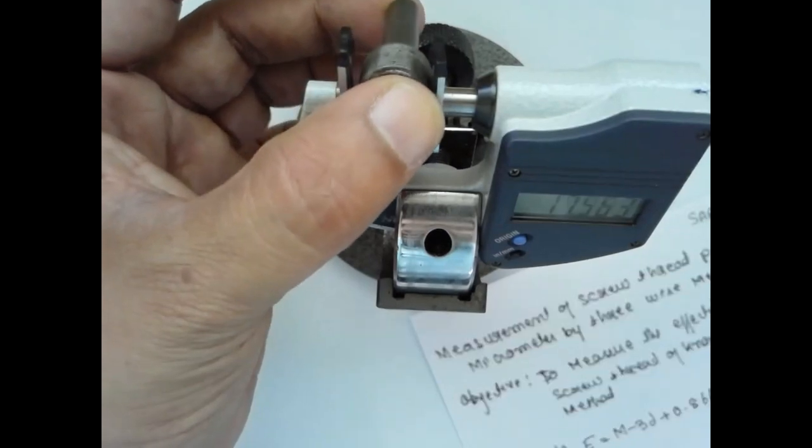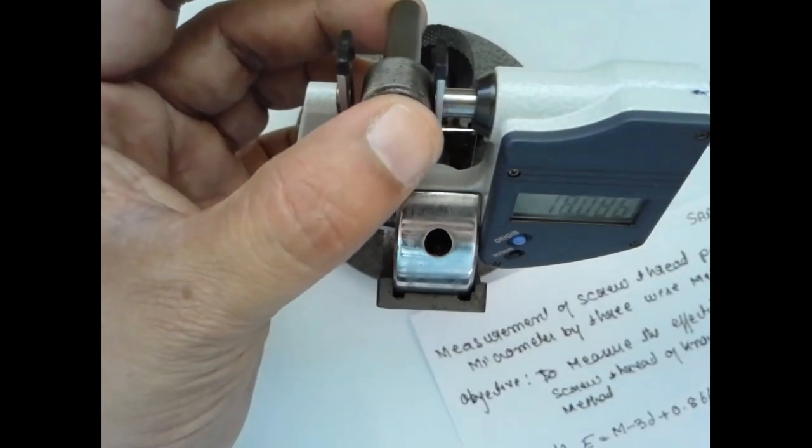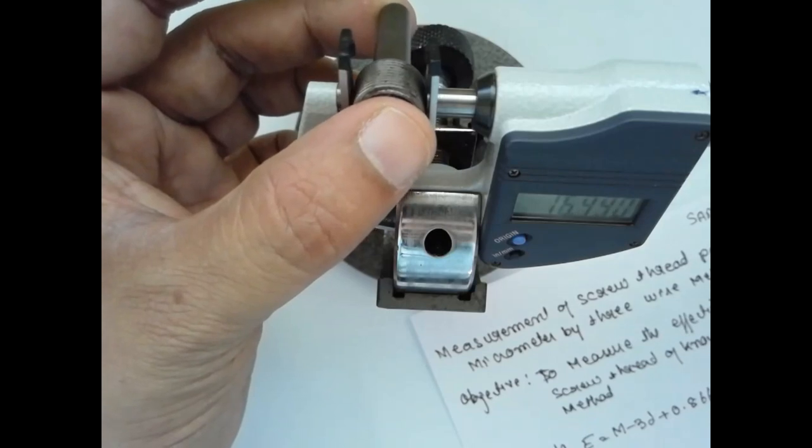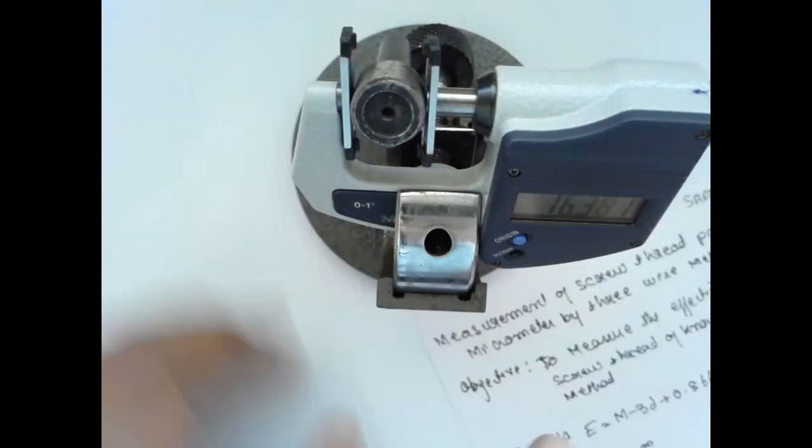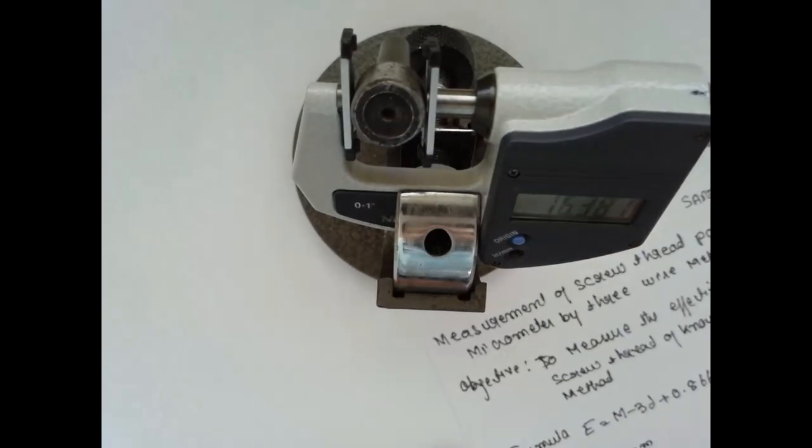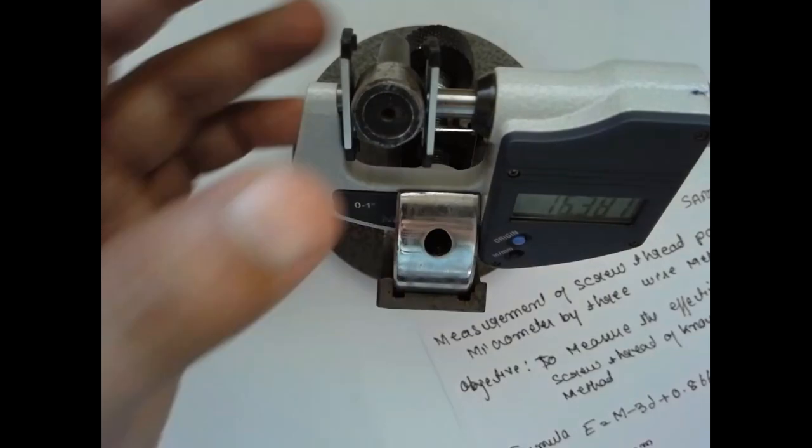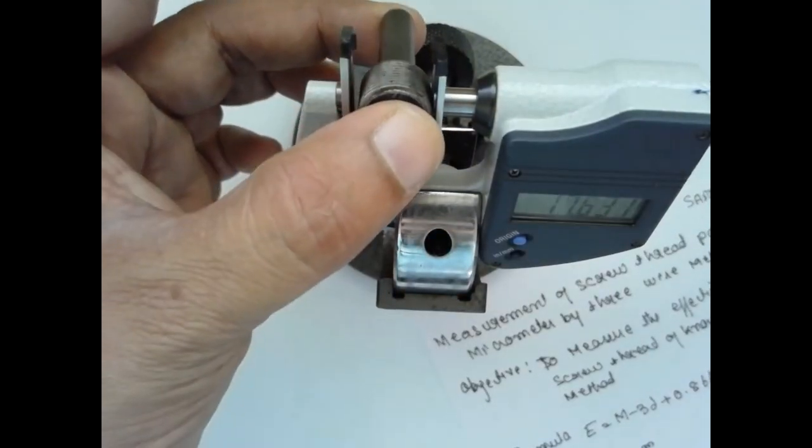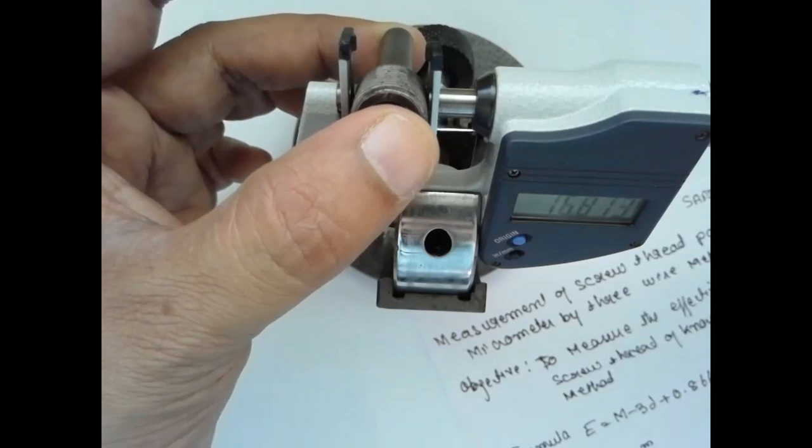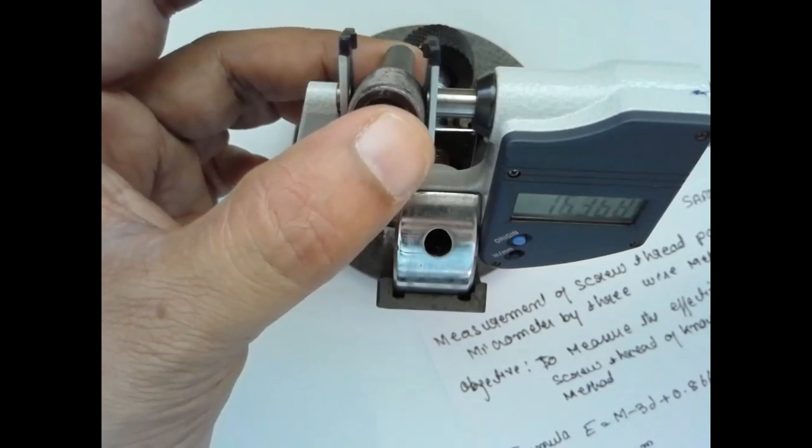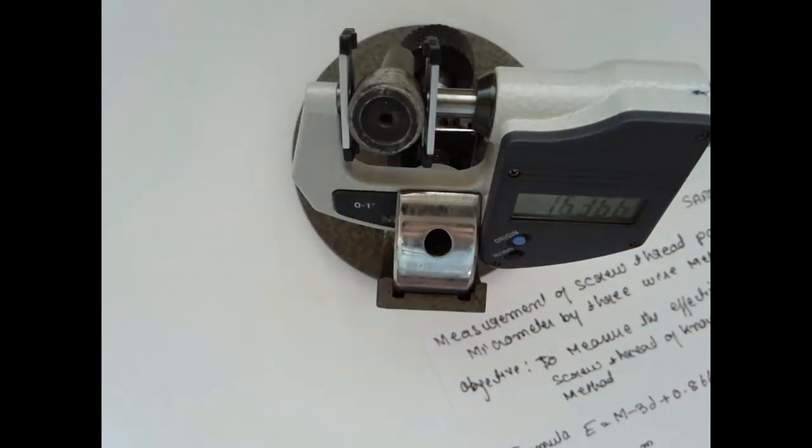Now I will go for second trial, m2. M2 reading will be 16.381. I will go for third trial. M3 is equal to 16.366 mm.